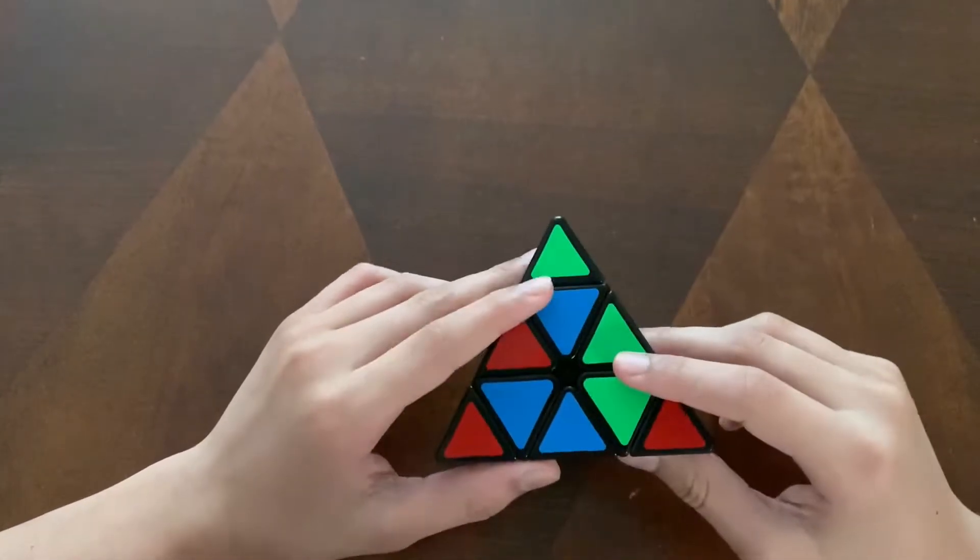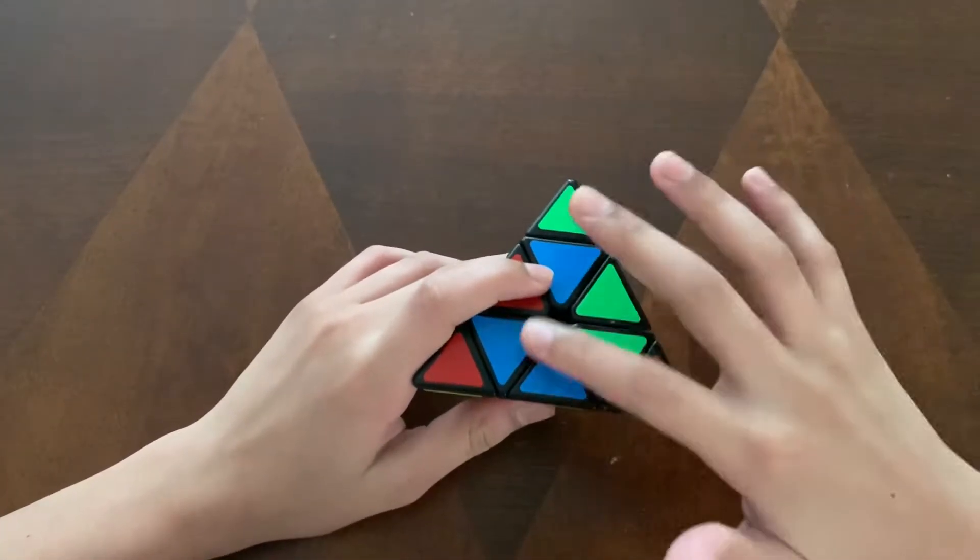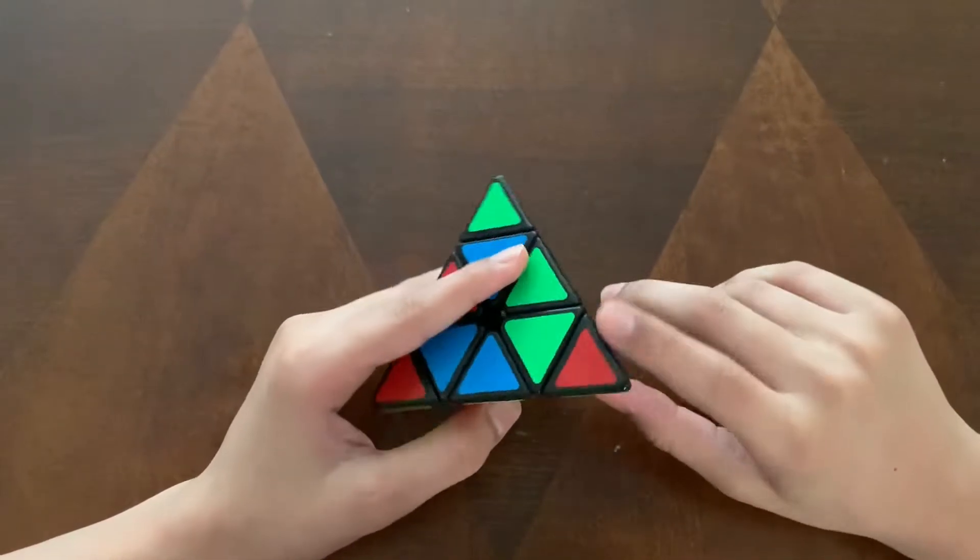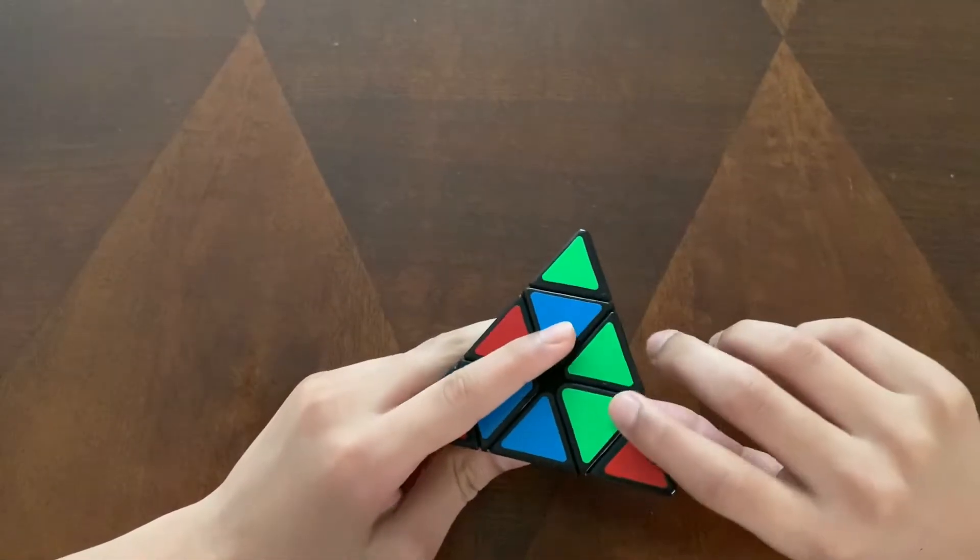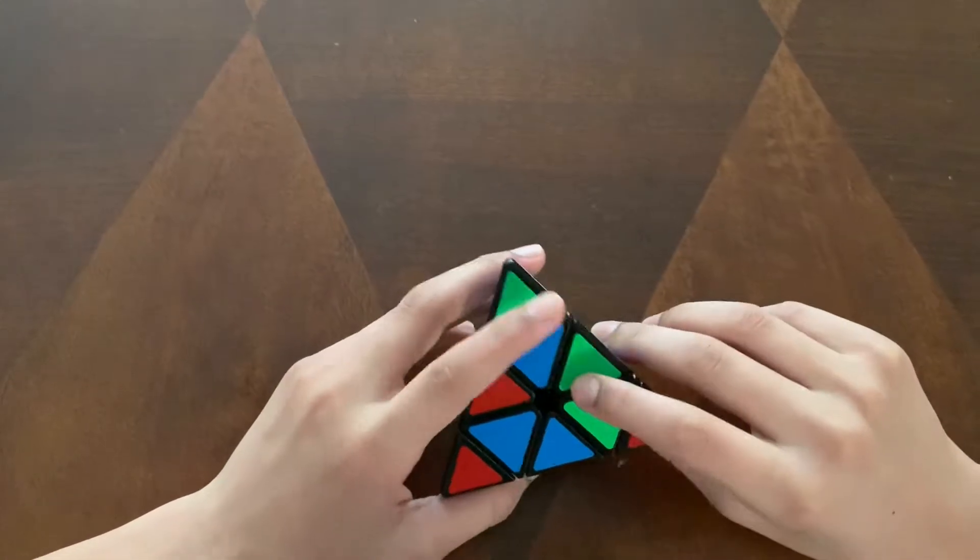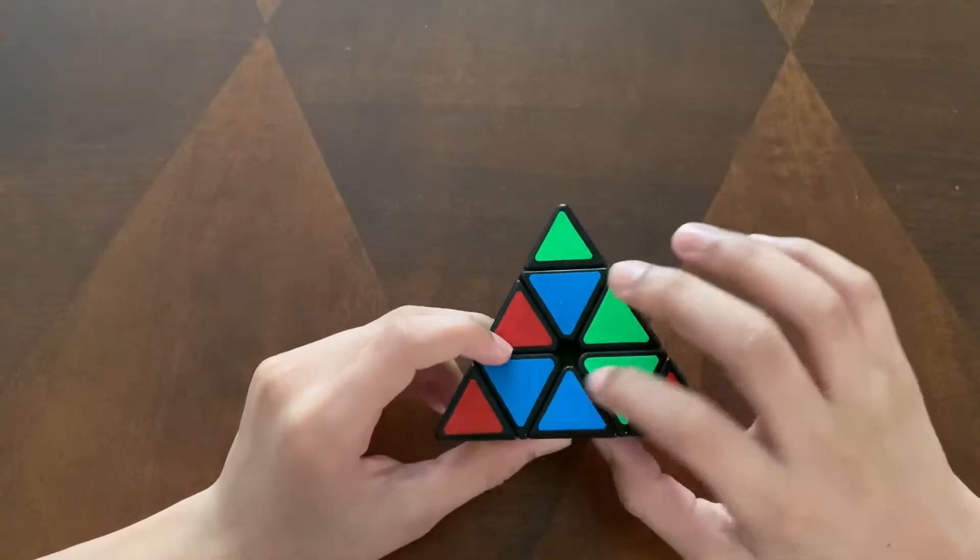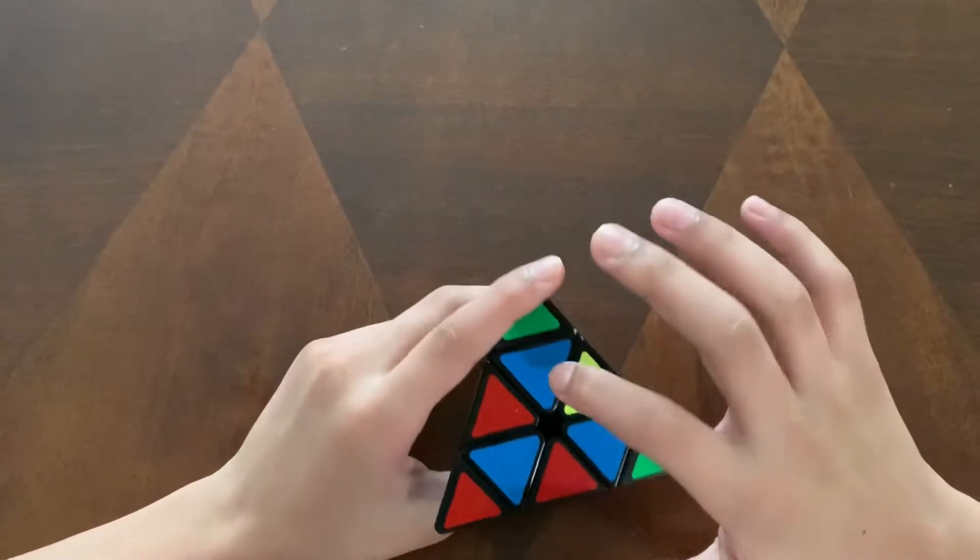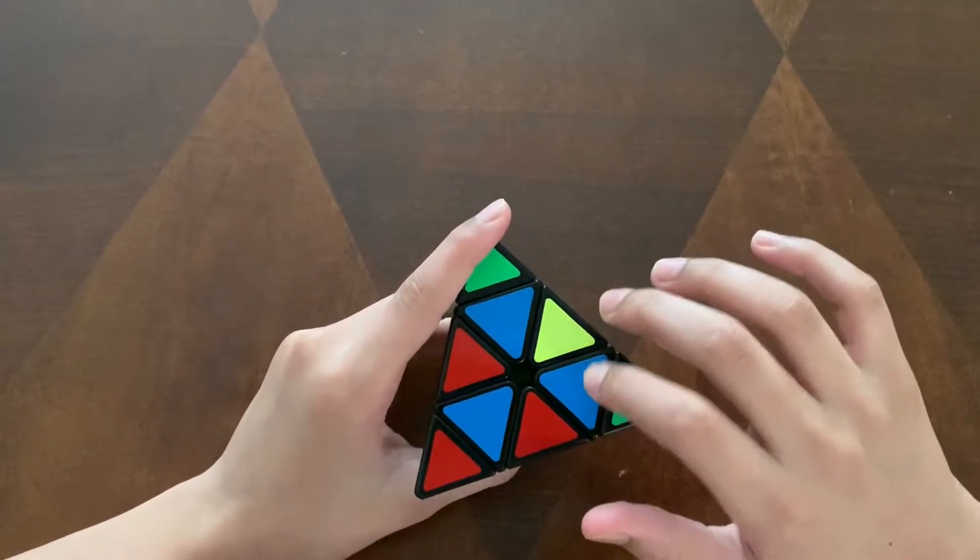So let's get to solving it. Now solving the face may be very easy but aligning the corners may not be. So let's align the corners first. So to align the corners we need to have all three center pieces on one face. So I just have to do one simple rotation and we have all three center pieces on one face.